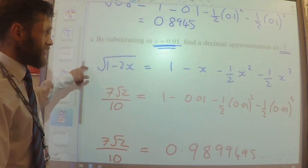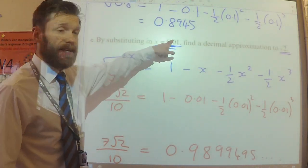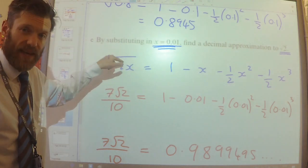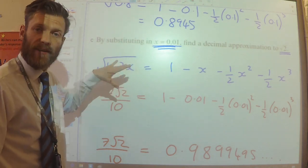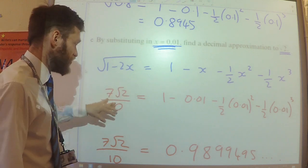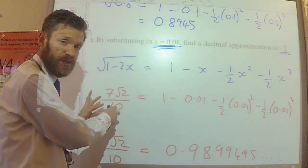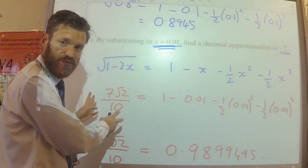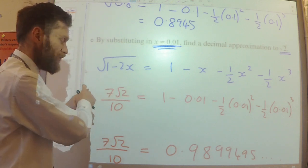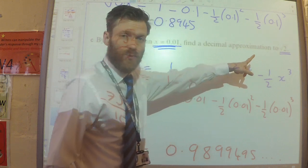With these sorts of questions, what you want to do is take the value of x they give you, substitute it in, turn whatever you get into a fraction, do some work with the surds to simplify it, and then think about how you can rearrange that to get the approximation you want.